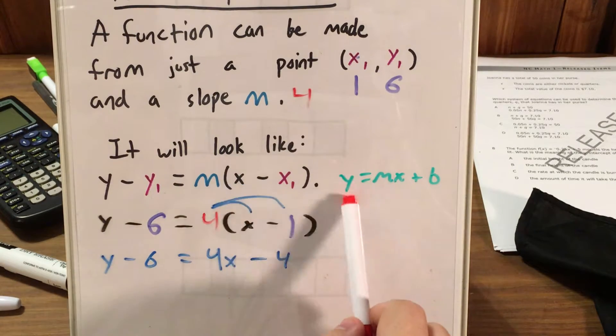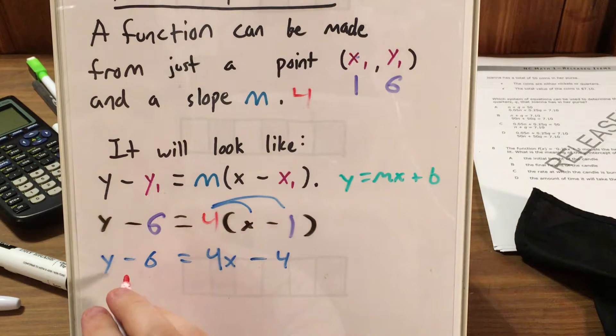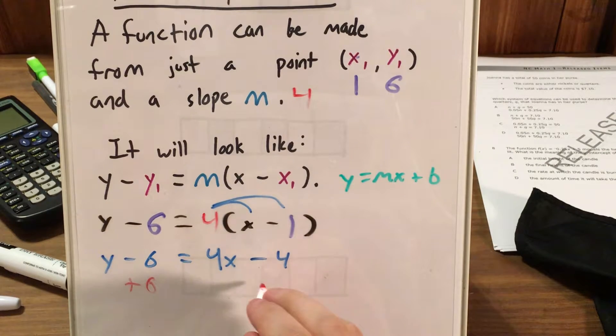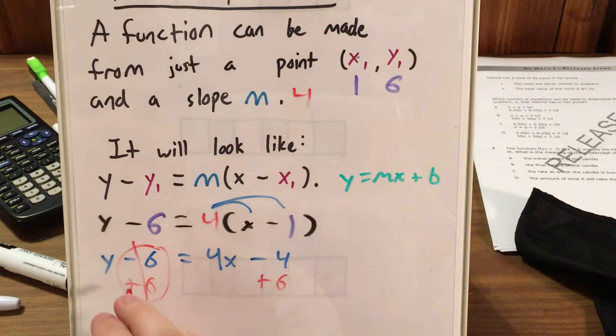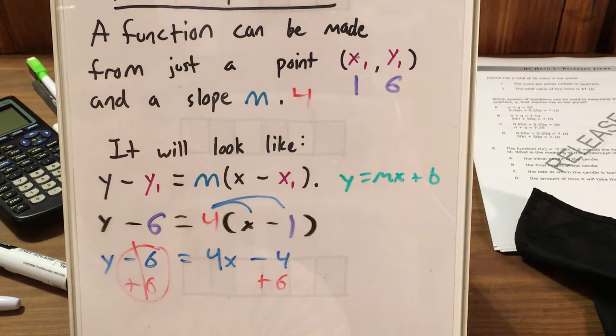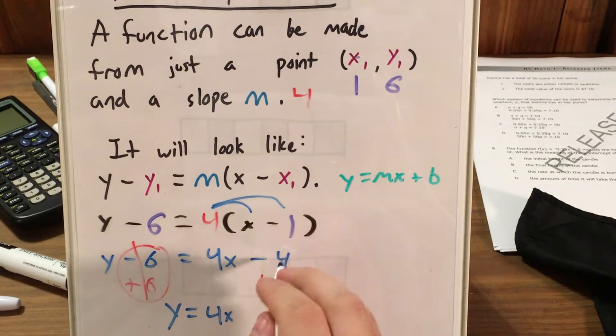And in slope-intercept form, y is by itself. All the numbers are over here on the right side. So if I see a number on the left side, I want to get rid of it. Since this number is just minus 6, I want to add 6. I do the same thing to both sides. So minus 6 and plus 6 are going to cancel. And that's just going to leave me with y equals 4x. And now over here, I see minus 4 and plus 6. And I can use my rules of integers, or I can flip that mentally and say that's just 6 minus 4. However I want to do it, I should get an answer of plus 2.